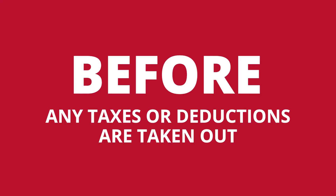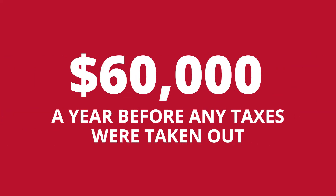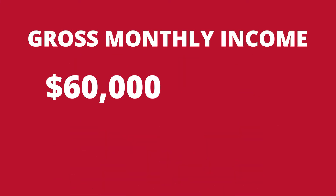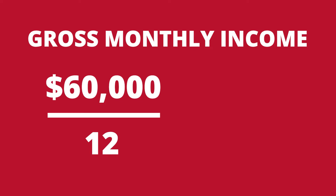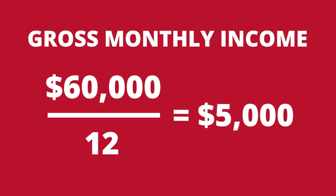Let's find your gross monthly income. Your gross monthly income is your income before any taxes or any deductions are taken out. For example, let's say you made $60,000 a year before taxes. Your gross monthly income would be $60,000 divided by 12, which would be $5,000 a month.